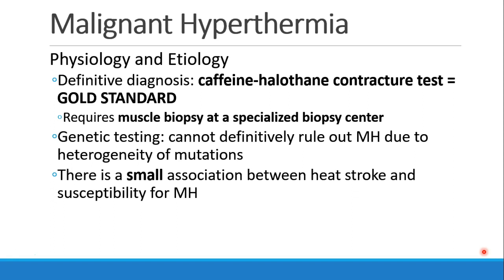How do we diagnose MH? The definitive diagnosis is called the caffeine halothane contracture test — this is the gold standard. To do this, you need to go to a specialized biopsy center, of which there are only a few in North America. They take a muscle biopsy and test the specimen in a lab at that center. There is genetic testing, but it cannot definitively rule out MH because there are so many different mutations. You could rule in MH, but you can't really rule it out.